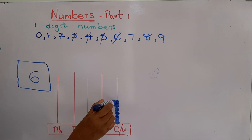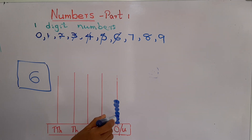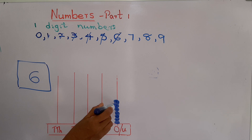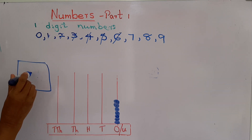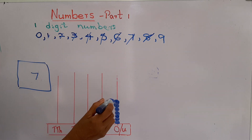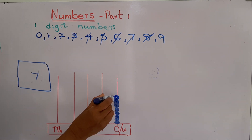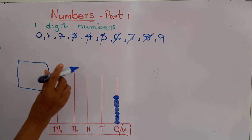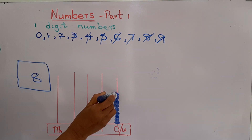Now look at the ones place — how many rings are there? 1, 2, 3, 4, 5, 6, 7. Then the abacus represents number 7. We will move to number 8. We can draw one more ring here, and then the abacus represents number 8. When it comes to number 9, the abacus represents number 9.